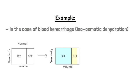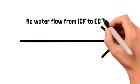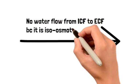And now we can look at how the ICF is going to change. For water to flow from the ICF to move to the ECF, there has to be a change in the osmolarity. But in this case, it's an iso-osmotic dehydration, so there is no change in the osmolarity. Therefore, no water flow. And that's a key thing to keep in mind in terms of iso-osmotic situations in general.